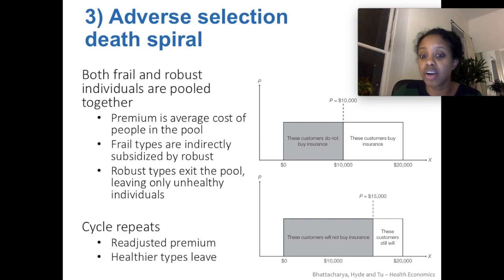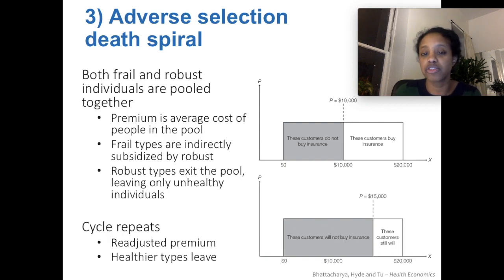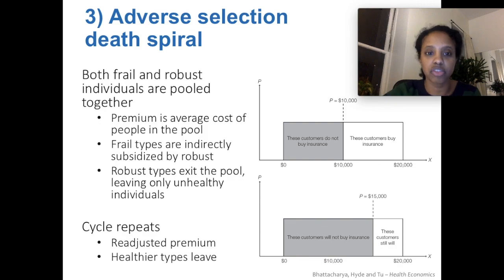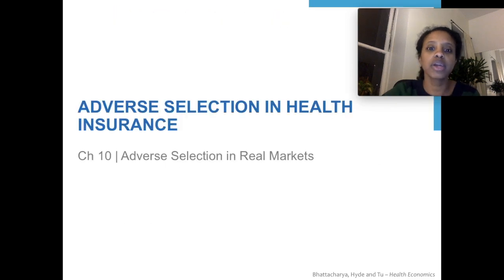Then the next year, all those people with expected costs of $10,000 or less leave, and now the average premium across those who remain would increase to $15,000. There might have been some people who were on the fence before, but now that it's increased to $15,000, they'll drop out too. And then the cycle continues from there — that's an adverse selection death spiral. Now we'll look at some empirical evidence of these phenomena.